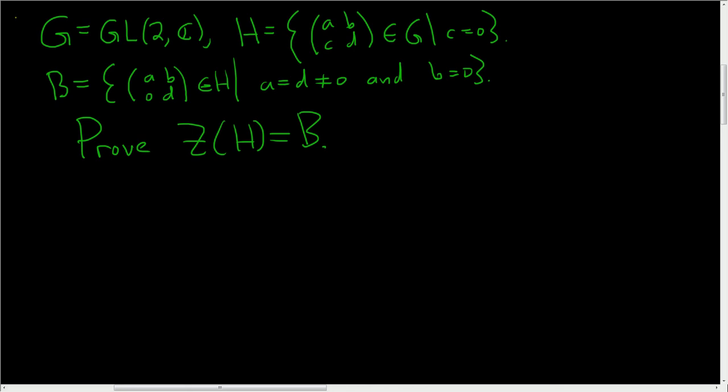So let's talk about what's going on. We have a group G, the general linear group of order 2. This is the set of all 2 by 2 invertible matrices with complex entries.